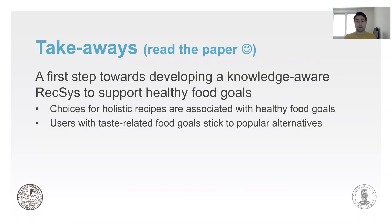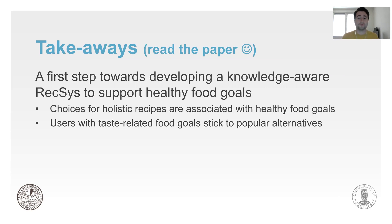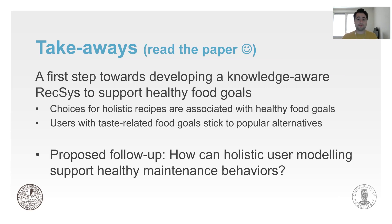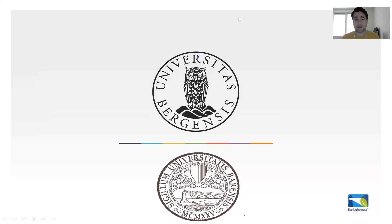In conclusion, I would invite you to read the full paper. This is the first step towards developing a knowledge-aware food recommender system. We also think it can be used to support healthy food goals, because the user model catered to those characteristics we could measure. If users are more interested in taste-related reasons for food, they will do fine with a popular recommendation model. In a follow-up study, we will investigate further how our holistic user models can support healthy maintenance behaviors. If you have any questions, please feel free to ask, and thank you for being here.